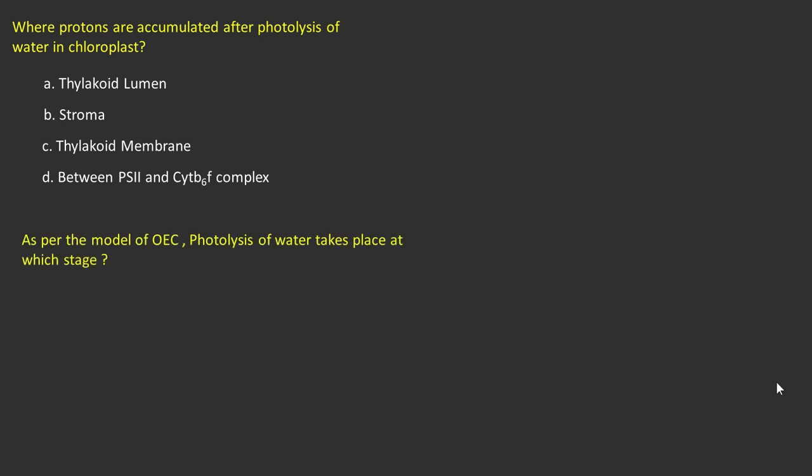As per the model of the oxygen evolving complex, photolysis of water takes place at which state? Options: S0 to S1, S1 to S2, S2 to S3, S3 to S4, S4 to S0.